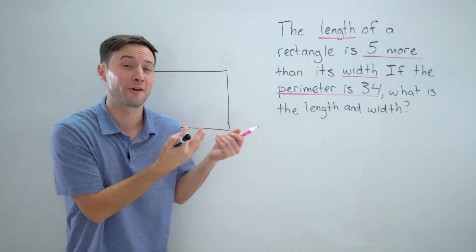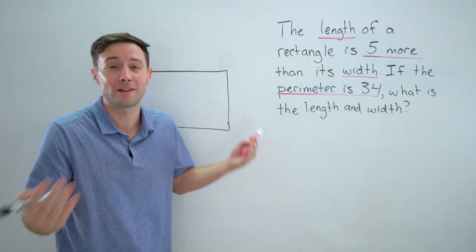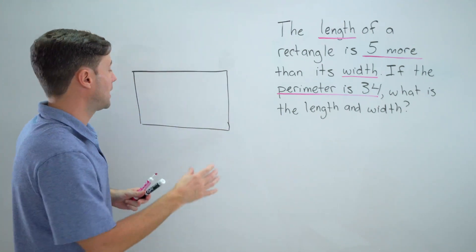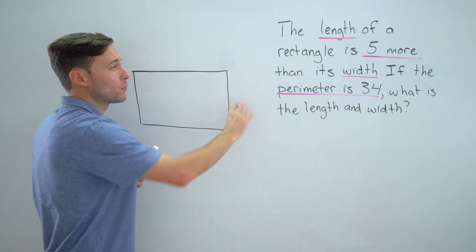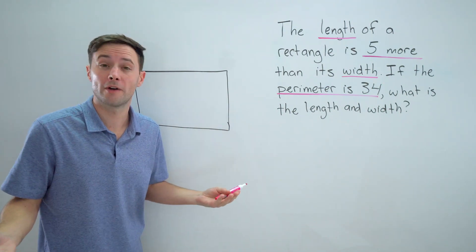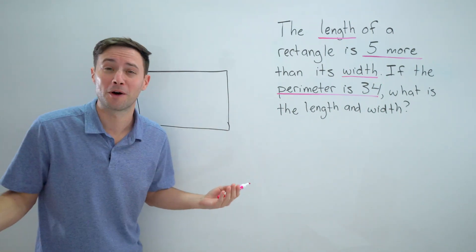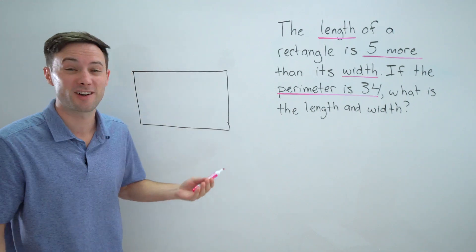Obviously, they don't tell us what the width or the length are, so I'm going to call this my length and this is my width. We don't know what the width is, so let's use a variable. Since I'm the one making the equation, I'm going to call it w.